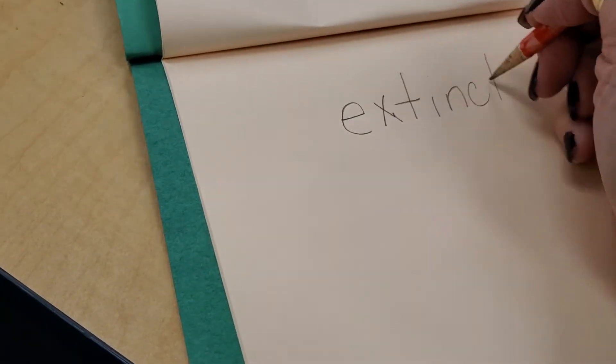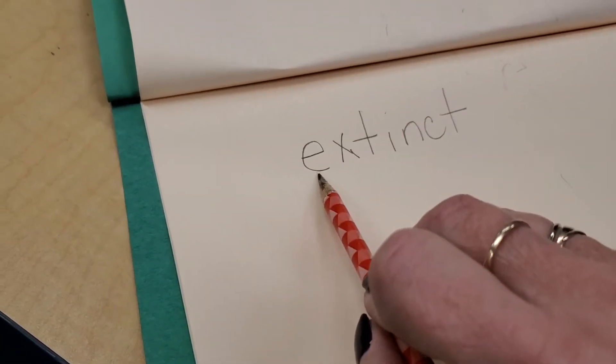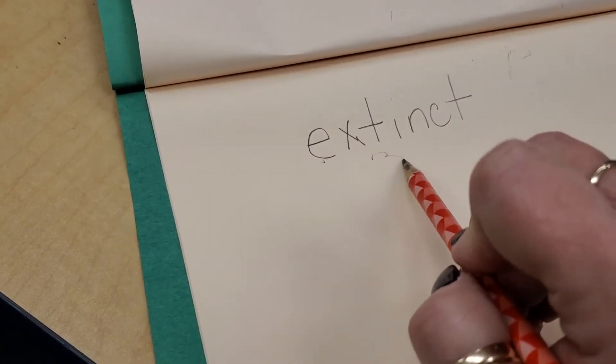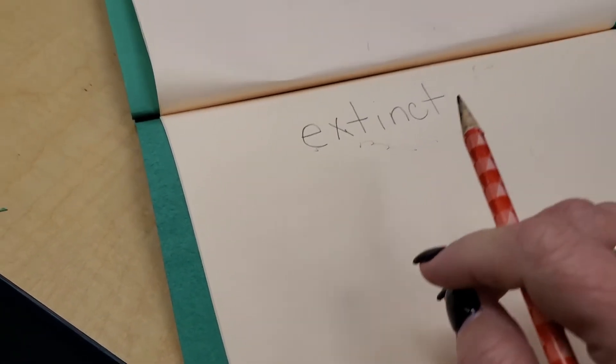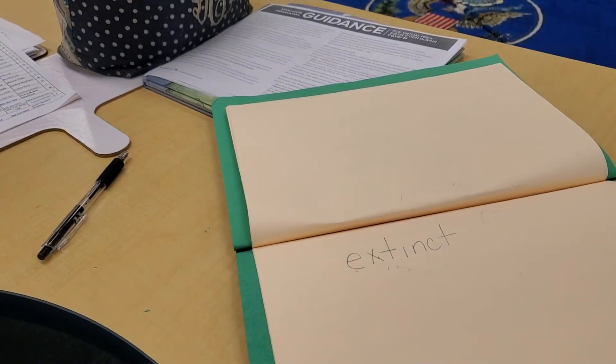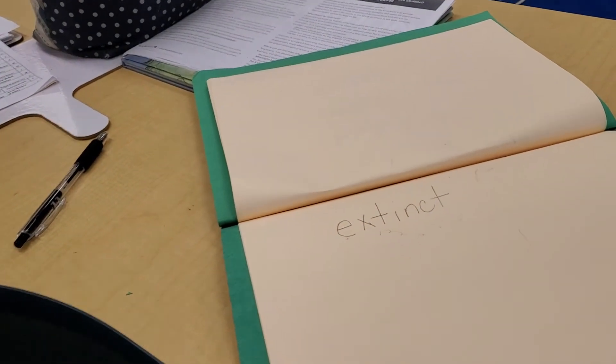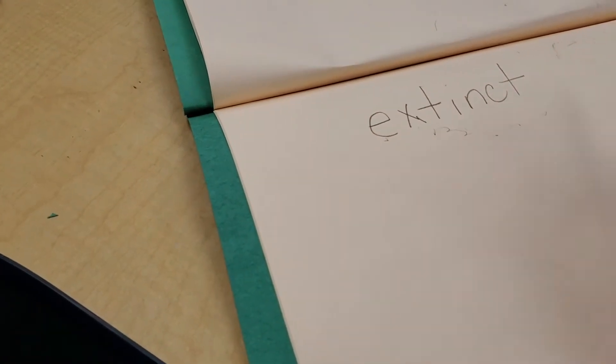Extinct. E-X-T-I-N-C-T. Extinct. And that means they're gone forever, boys and girls. That word means gone forever. Nobody will ever see a live dinosaur ever again. They're extinct.